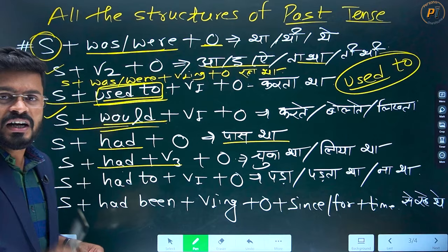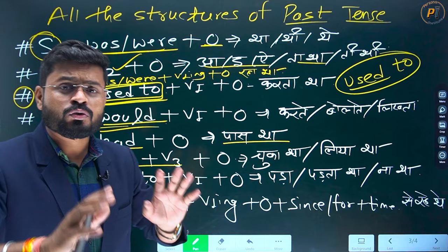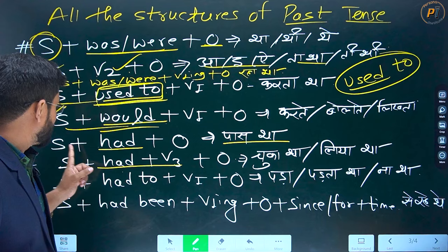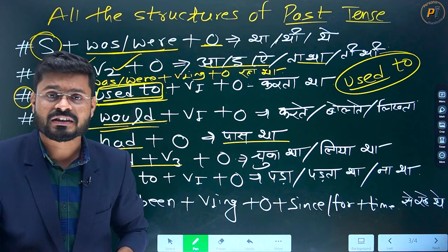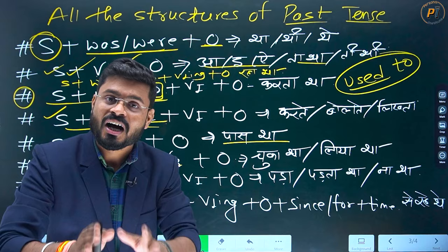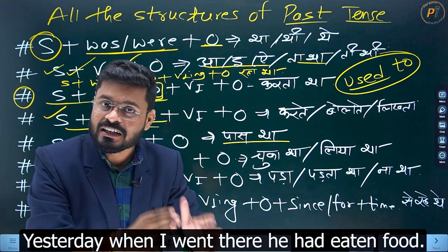Yeh alag structures hain — bohot alag! Agar aap maan lijiye, aapne kaha: kal maine uski madad ki — toh yeh sentence aapka simple past mein banega: yesterday I helped him. Lekin agar aap bologe 'yesterday I had helped him' — toh yeh galat ho jaayega. Yesterday, last week, last month, last year — yeh aise words hote hain jo simple past tense ke saath lagte hain, past perfect ke saath nahi. Past perfect tab lagana hai jab do kaam past mein hue: jaise kal jab main wahaan gaya, toh woh khana khaa chuka tha — yesterday when I went there, he had eaten food.